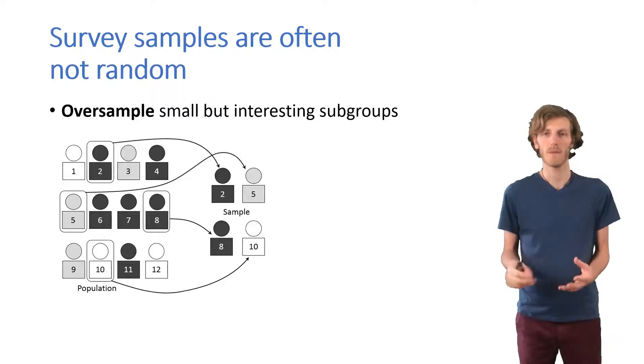So let's sample more of them that we can make a good estimate for gray people and then let's give them a lower weight that we can still make correct estimates for the overall population.